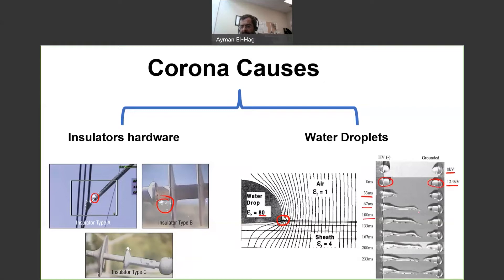those water droplets become closer and closer to each other, and until you have a complete wetting on the surface that can lead to leakage current, that can lead to dryband arcing.